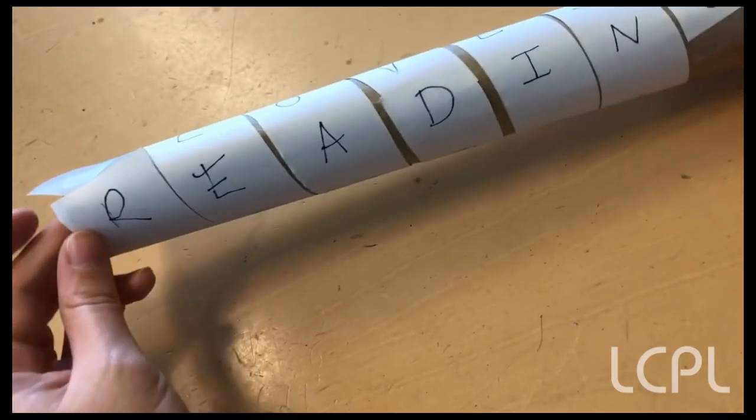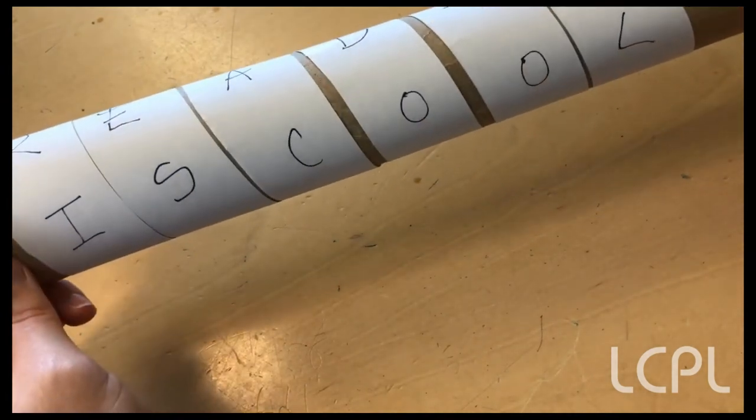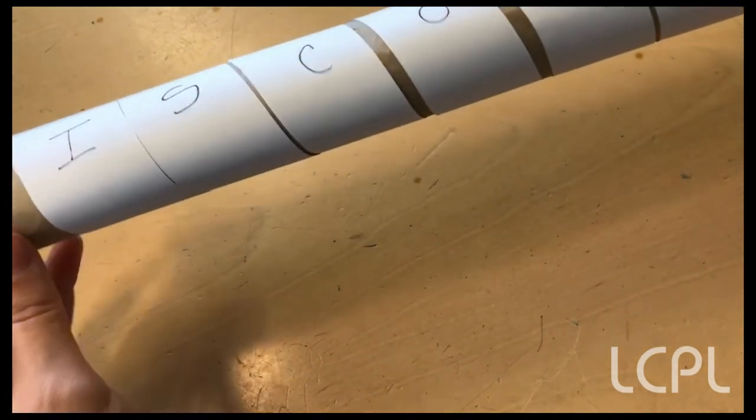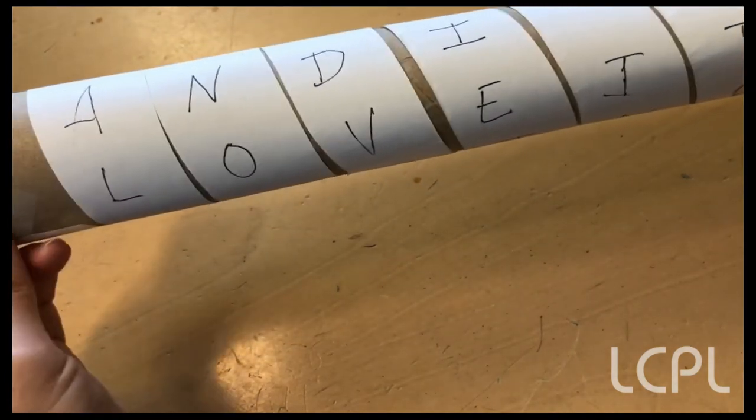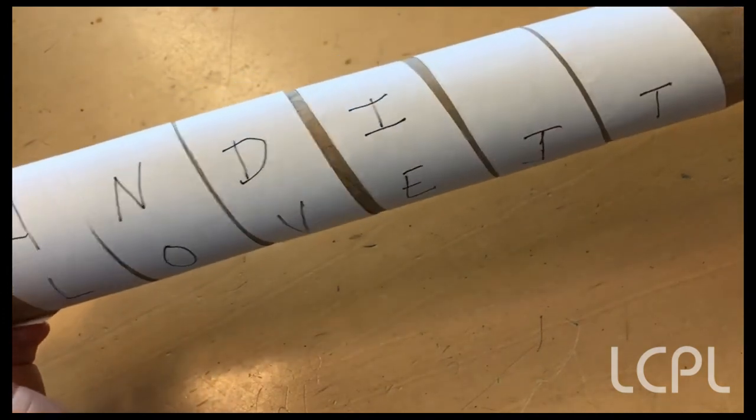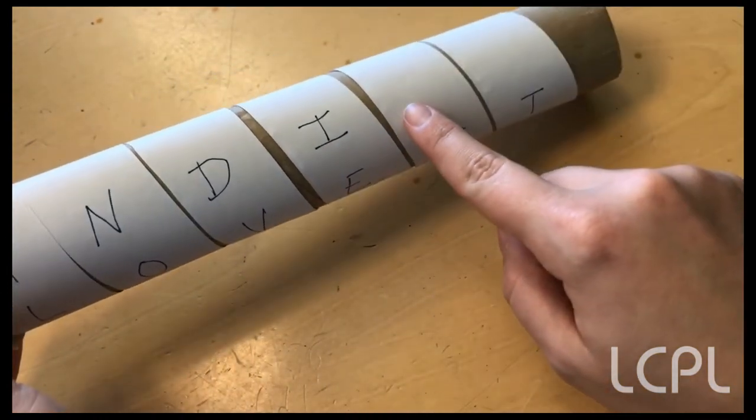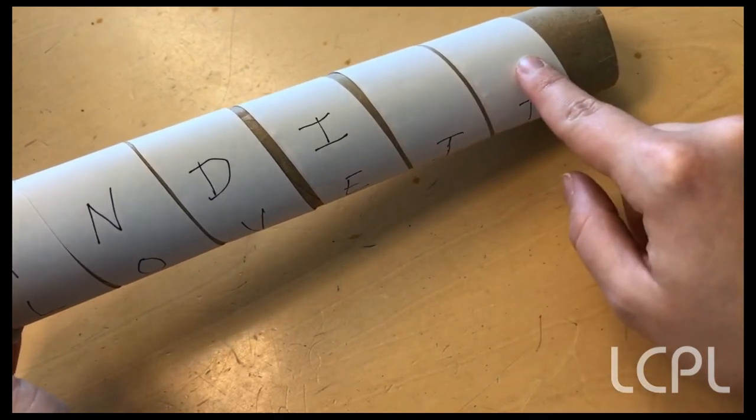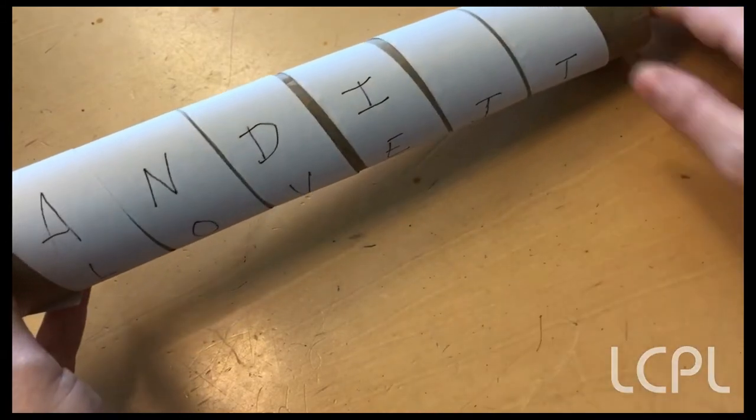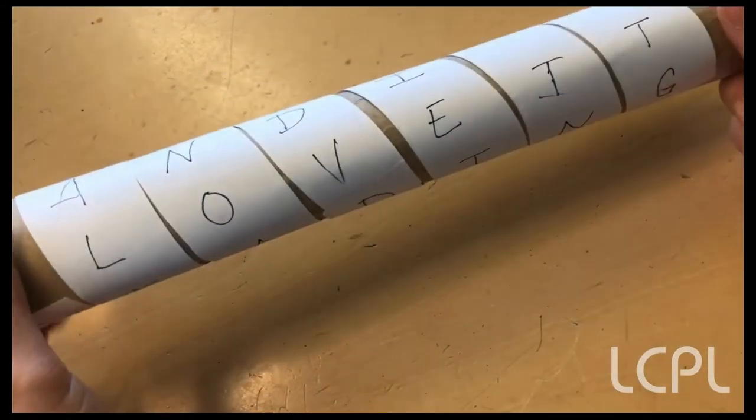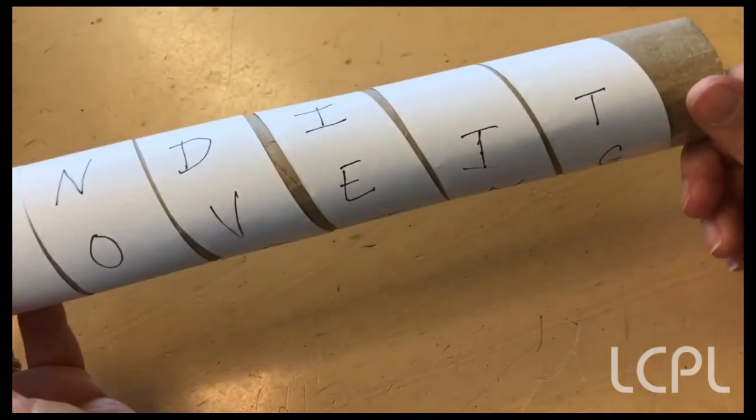So you'll see here that my message is "reading is cool and I love it." You'll also notice that when I didn't have enough room to write "love" in this space after "I," I just skipped over it. So you can do that yourself if you'd like. And so this is what your secret message will look like on your scytale.